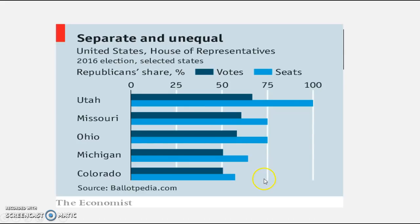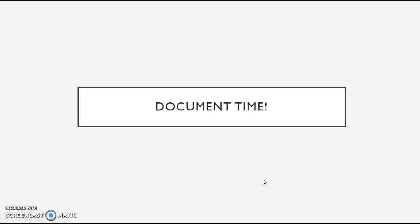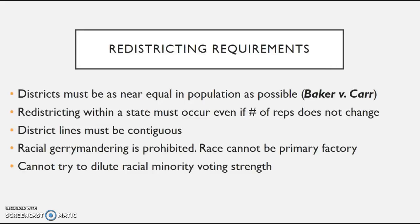You can see other instances where Republicans got fewer votes but won more seats percentage-wise — both Democrats and Republicans do it. I would implore you to read Shaw v. Reno and Baker v. Carr in full. When states redraw districts, the requirements are that districts must be near equal in population — a ruling that comes out of Baker v. Carr in Tennessee. Redistricting within a state must occur even if the number of representatives doesn't change, since population in states certainly changes.